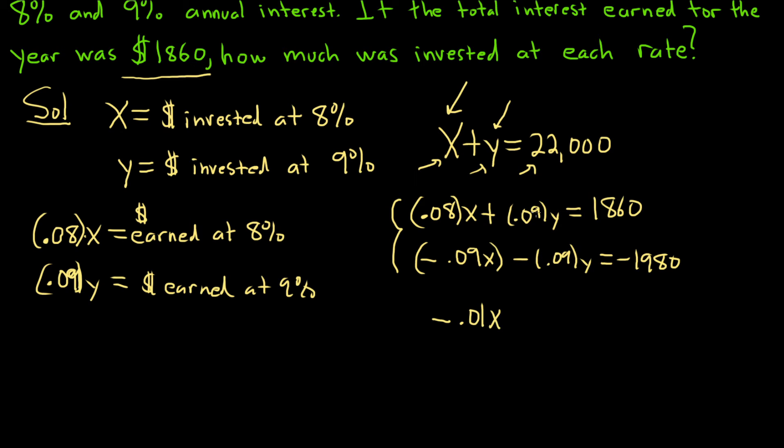0.08X minus 0.09X is going to give us negative 0.01X. And then here, these are going to cancel. And then we get 1860 minus 1980, which gives us negative 120. Then you just divide this by negative 0.01. So we end up with 120 divided by 0.01. It's going to be a really nice number.